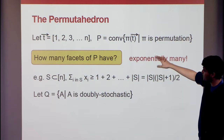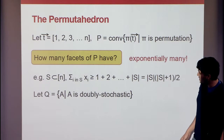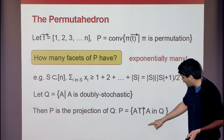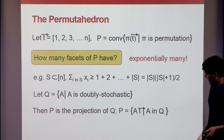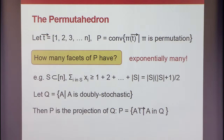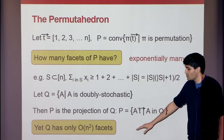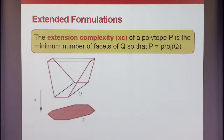Even for this simple example, I can drastically reduce representational complexity in terms of how many linear inequalities I need if I instead think about generating P as the projection of a higher dimensional polytope. If I take Q to be a polytope in n-squared dimensions — the set of doubly stochastic matrices, which are entry-wise non-negative with rows and columns summing to exactly one — then any such matrix A multiplied by vector T gives a point in the permutahedron, and conversely every point in the permutahedron can be represented this way.